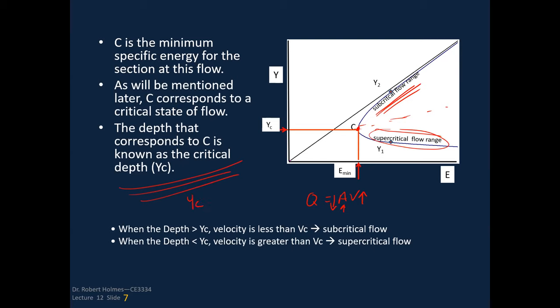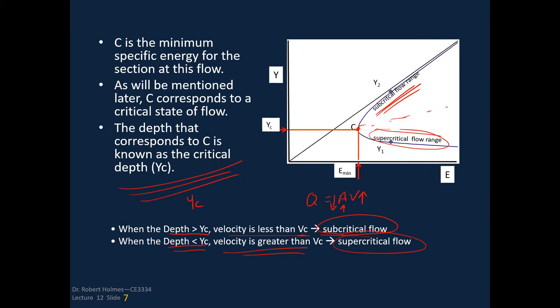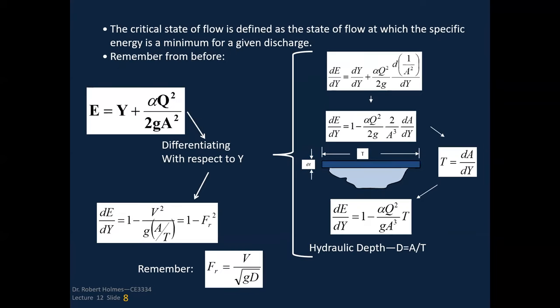When the depth is greater than the critical depth y sub c, the velocity is less than the critical velocity v sub c — that's the subcritical flow range. When the depth is less than the critical depth, the velocity is greater than the critical velocity — that is supercritical flow. The critical state of flow is defined as the state at which the specific energy is a minimum for a given discharge.